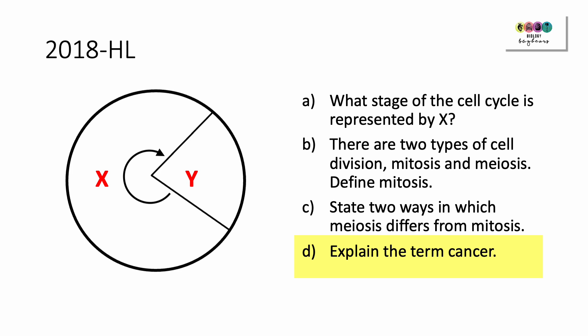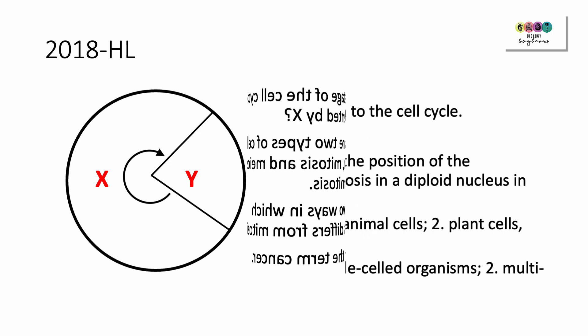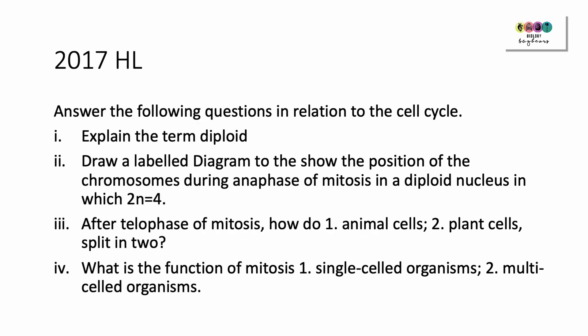Explain the term cancer: cancer is the name given to a group of disorders where mitosis is uncontrolled.